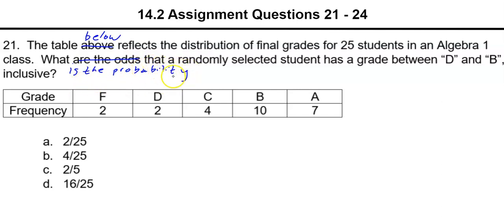So what is the probability that a randomly selected student has a grade between D and B inclusive? So to find the probability that our grade is going to be greater than or equal to D but smaller than or equal to B.